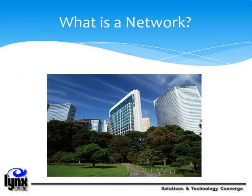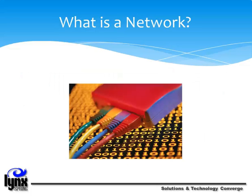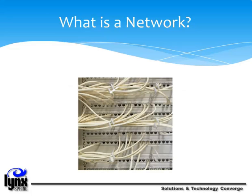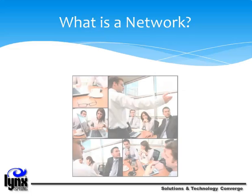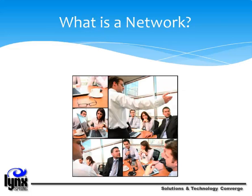Building automation networks can bring network-enabled building systems together so that they can work in concert. Networks can be small, as in two computers in a home or small office, or large, like the Internet, with hundreds of thousands of PCs and devices communicating together. A network can exist solely within the confines of an office, like a LAN or local area network, or it can be spread out over long distances, such as satellite offices sharing files and email with the home office on the other side of the world.